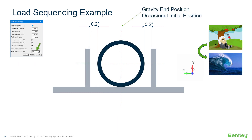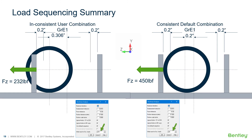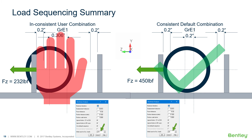If we try that again but this time also change the default sequence, setting gravity as the initial state for occasional loads, adding the occasional load results in a large force of 450 pounds and the correct displacement of 0.2 inches in the positive z direction, where the support stops the pipe from moving further. The combination GRT1+E1 now becomes consistent. Using the wrong sequence in this case resulted in a smaller support reaction being reported and a larger displacement than was physically possible. Inconsistent results might not always be this dramatic, but they can still be inconsistent without such obvious issues occurring.